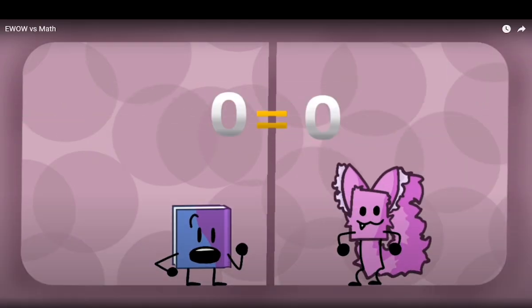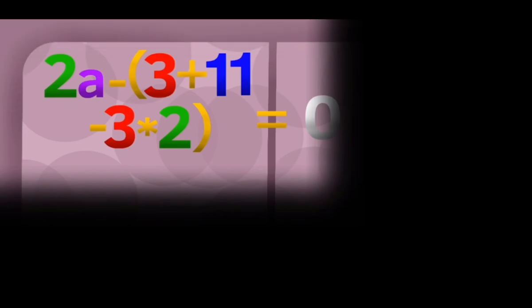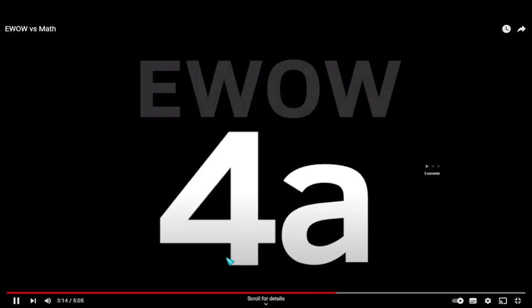Oh! PEMDAS? Oh no, I learned it as BOGMAS or BIDMAS. My bad. All right then. In fact, this is first. Since there are no parentheses, we can skip that step. Multiplication and division should happen at the same time, so we can just move left to right. Three plus 11 equals 14, and two multiplied by three is equal to six. Fourteen minus six equals eight. Tracked by EWOW 4.